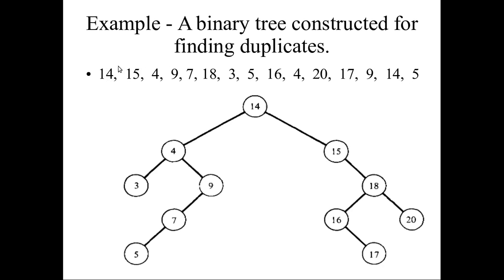Given a list of numbers, to construct a binary tree: first, 14 is written as the root node. Then 15 is compared — as 15 is greater than 14, it is written on the right subtree. Next, 4 is compared — 4 is less than 14, so 4 is written on the left. Then 9 is compared: less than 14, so compared with 4; 9 is greater than 4, so it is placed on the right side of 4. Then 7: less than 14, greater than 4, but less than 9, so it goes to the left side of 9.